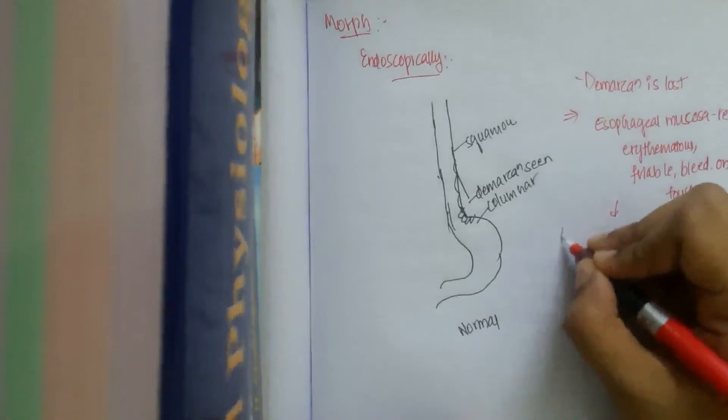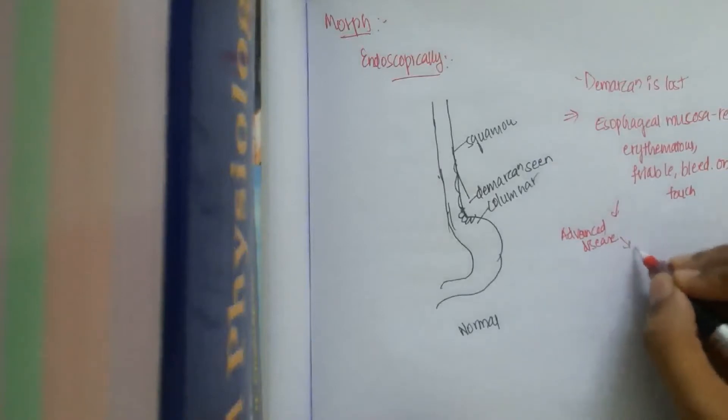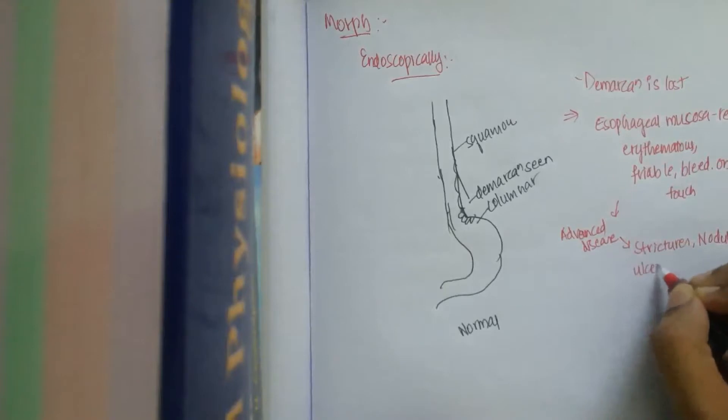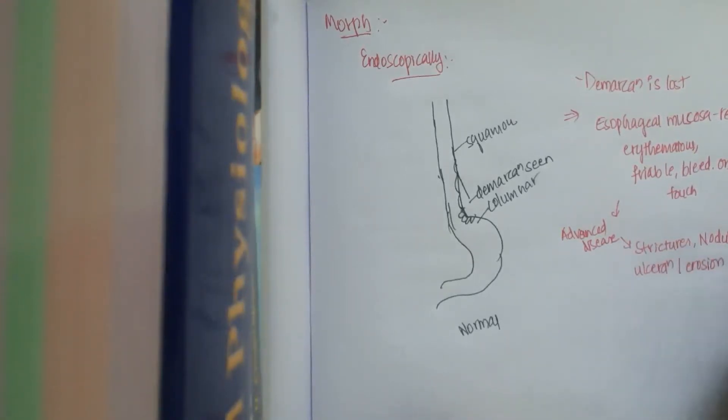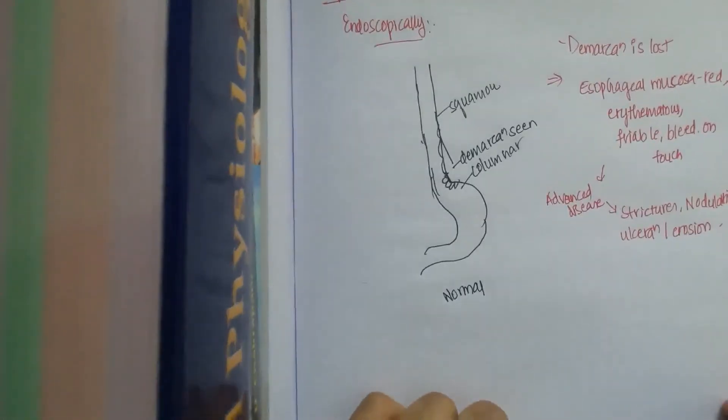In advanced disease, it may lead to strictures, nodularity may be there, or there may be ulcerations or erosions may be seen. Anything may happen among these.